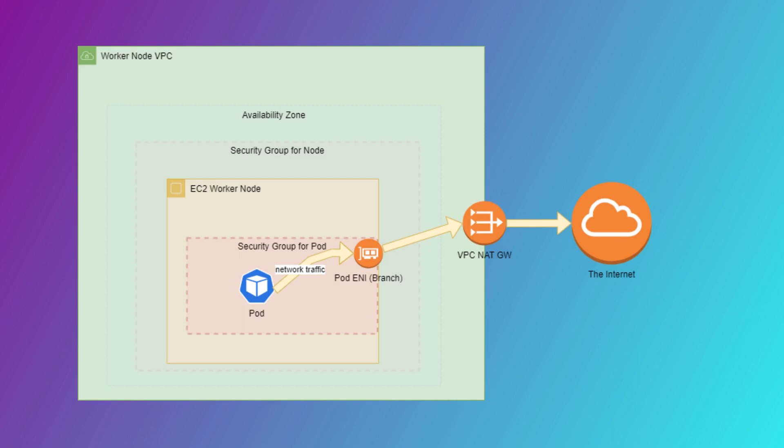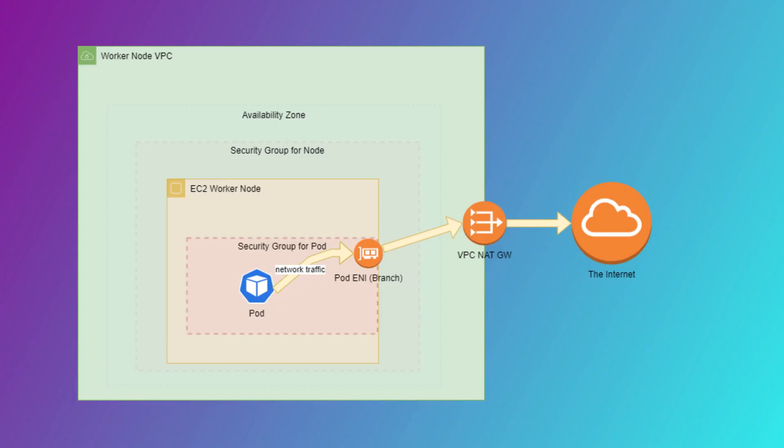AWS also has limitations on the number of branch interfaces a trunk can support, so keep that in mind. You have to shift from the previous thinking of applying policies to as many pods as possible up to the node's theoretical limit, and now think about the theoretical limit of pod security groups. Another important point: in the old setup, network policies didn't bypass the node security group — so a node security group blocking public access would block all pods. But now, because each pod gets a separate ENI, pods can bypass the EC2 security groups. This is especially relevant for PCI-compliant clusters, where your pods could suddenly access the outside network since they're no longer bound by node security groups.